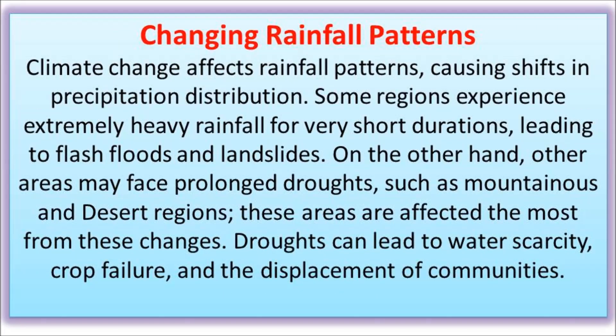Climate change affects rainfall patterns, causing shifts in precipitation distribution. Some regions experience extremely heavy rainfall for very short durations, leading to flash floods and landslides. On the other hand, other areas may face prolonged droughts, such as mountainous and desert regions. Droughts can lead to water scarcity, crop failure, and the displacement of communities.